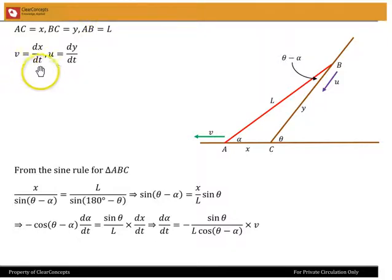V is dx/dt and U will be dy/dt. Now we can use the sine rule for triangle ABC and we get x/sin(θ - α) equals L/sin(180° - θ), and that gives us sin(θ - α) equals x/L times sin θ.